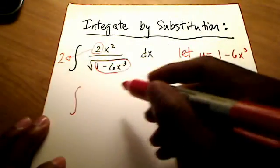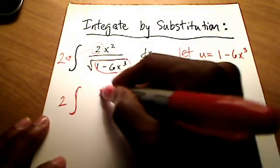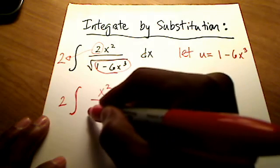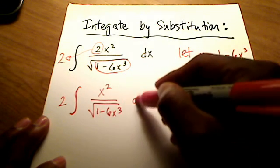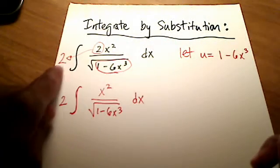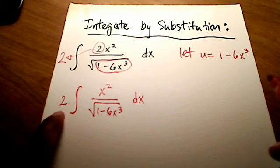Let me write this as the integral times 2. There's my 2 out front. So now I've got an x squared over the square root of 1 minus 6x to the 3rd dx. So maybe I should do that now, just bring the 2 completely out front since it's a constant multiple. Now back to this.